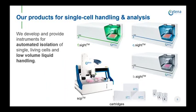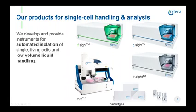At Cytina we develop instruments for automated isolation of single living cells since 2014. All our instruments are capable of label-free isolation of cells and come with image-based cell detection. It started with the SCP, which was launched in 2015. In 2018 we launched the X-Cyde series, including the F-Cyde and C-Cyde for isolation of mammalian cells, and the B-Cyde, which comes with a higher resolution optical detection system for isolating microbiome cells such as bacteria.